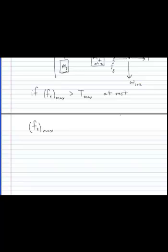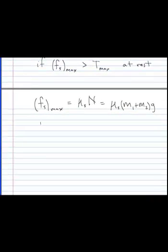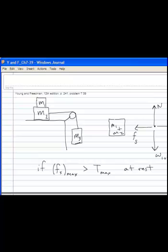So we know how to find the maximum static friction force. That's the coefficient of static friction times the normal force. And in this case, the normal force is Mg, but M is the sum of the two blocks. The tension, the maximum tension occurs when there's no acceleration.